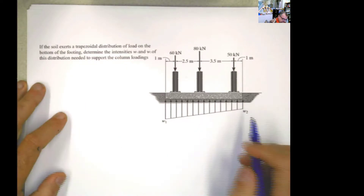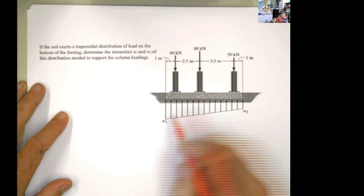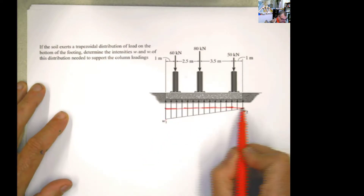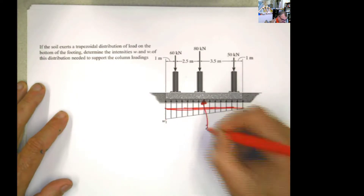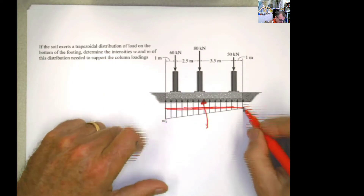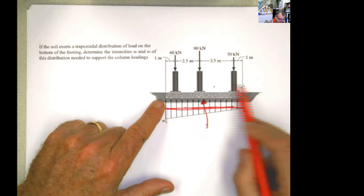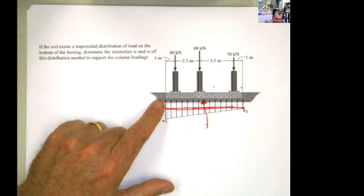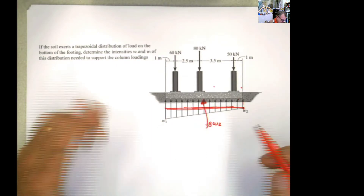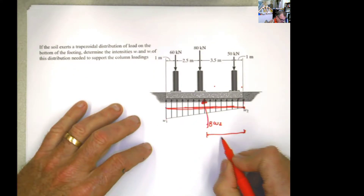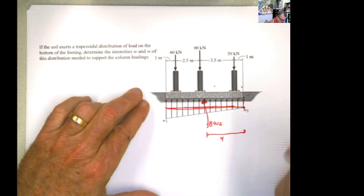Let's try to do that. You have distributed loading here — don't get mesmerized by w1 and w2. The first thing is to divide these into two loads. You'll have an equivalent load coming from the rectangle: the height is w2, and the base is 2.5 + 3.5 + 1 + 1 = 8. So the value of this force is 8w2, and its location is at 4 from either end.